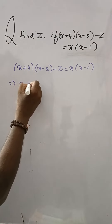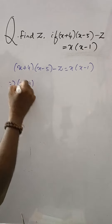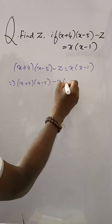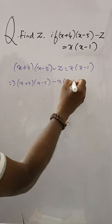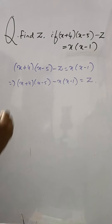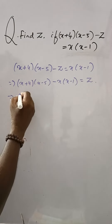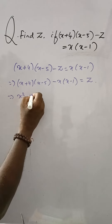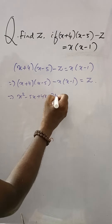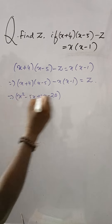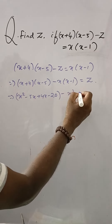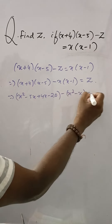X plus 4 into X minus 5 minus X into X minus 1 is equal to Z. Then, multiplying both: X squared minus 5X plus 4X minus 20, bracket minus X squared minus X, is equal to Z.